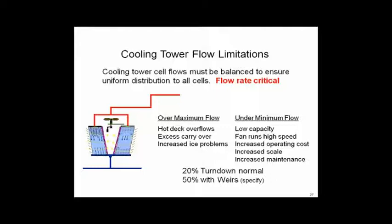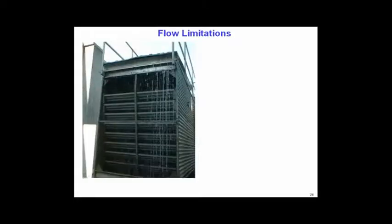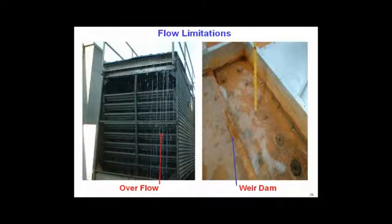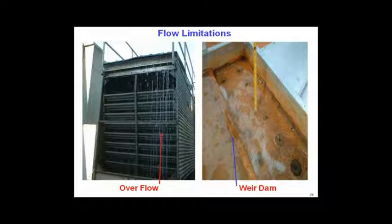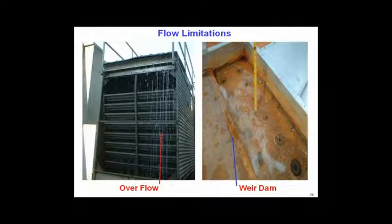Here on the left you see overflow — water going right off the hot decks down the side: wasted pumping costs, chemical costs, and freezing risk in cold weather. On the right is the weir dam: a small piece of metal across the top of the hot deck that dams the water up to ensure the fill face always has some water on it. The air always has to pass through some moisture somewhere on the fill face to keep the tower working. With a weir dam, you can turn down to 50%. Pretty easy.